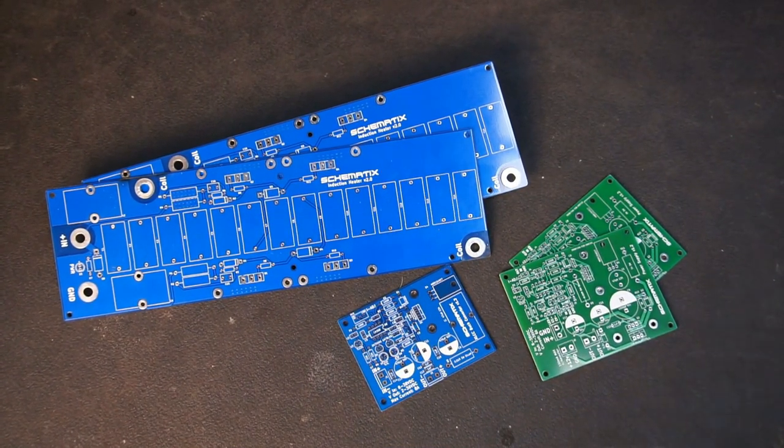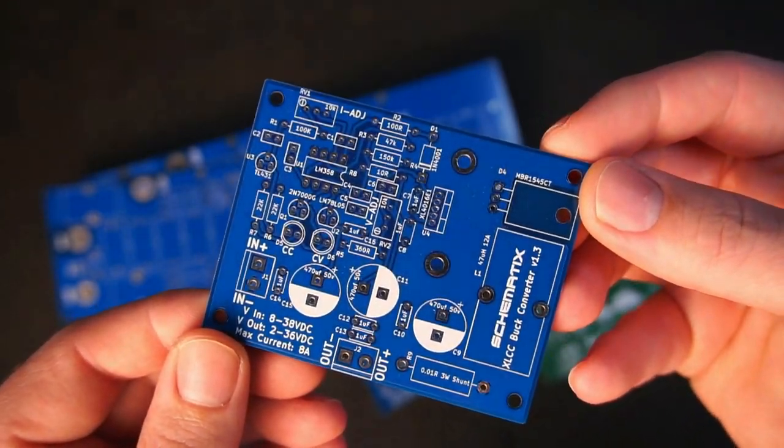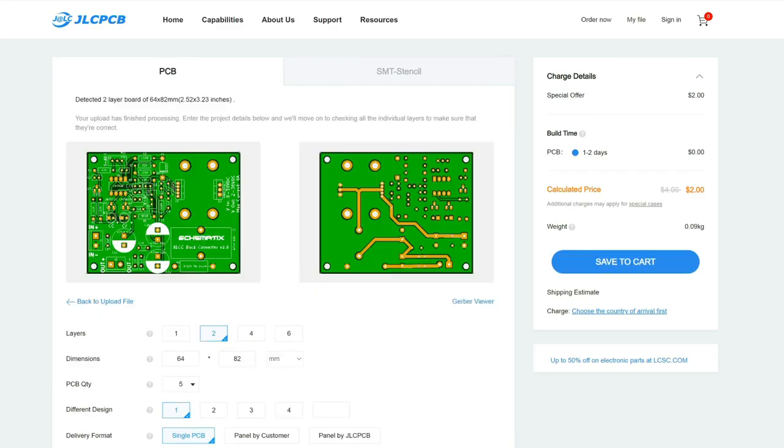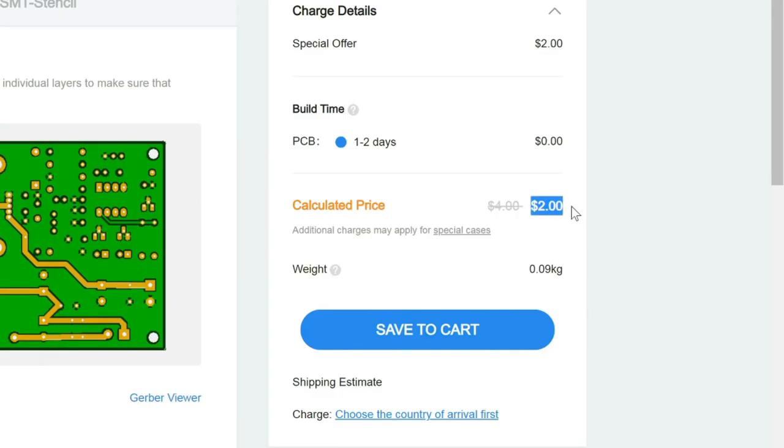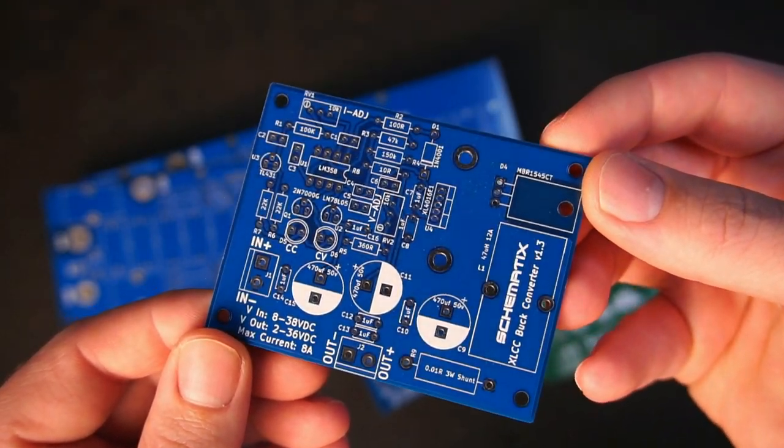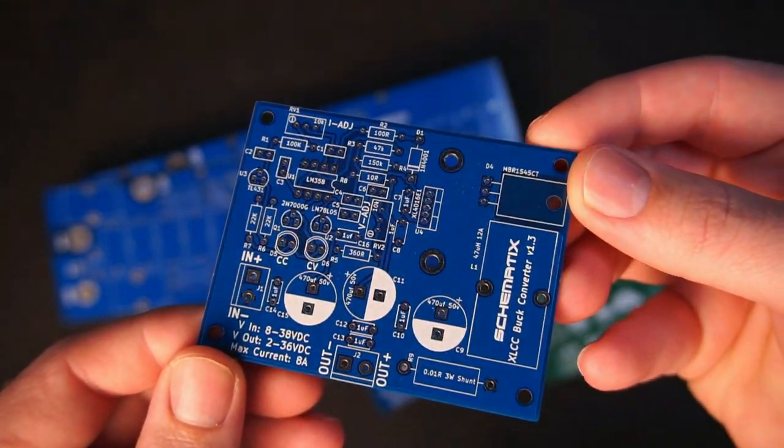Thankfully this won't happen to you, because you can order a custom printed circuit board from JLCPCB. Starting from as little as $2 for 5 PCBs, they have fast production time and offer a wide range of design options and colours to choose from. So why don't you try out JLCPCB for your next project.